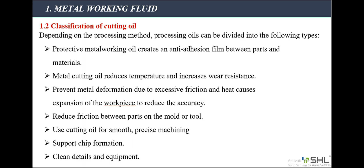About the classification of cutting oil: depending on the processing method, processing oils can be divided into the following types. Protective metalworking oil creates an anti-adhesion film between parts and materials. Metal cutting oil reduces temperature and increases wear resistance, preventing metal deformation due to excessive friction. Heat causes expansion of the workpiece, reducing accuracy. Cutting oil reduces friction between parts on the mold or tool for smooth, precise machining, supports chip formation, and cleans details and equipment. It is necessary to rely on the machining speed and lubrication principle to select the most optimal oil properties.